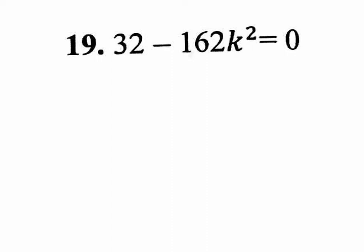Let's jump to number 19. 32 is not a perfect square, and 162 is not a perfect square. So maybe we could factor out a GCF. What could we pull out of the 32 and the 162? They're both even numbers, so you could pull out a 2. Let's pull out a 2 and see what happens.